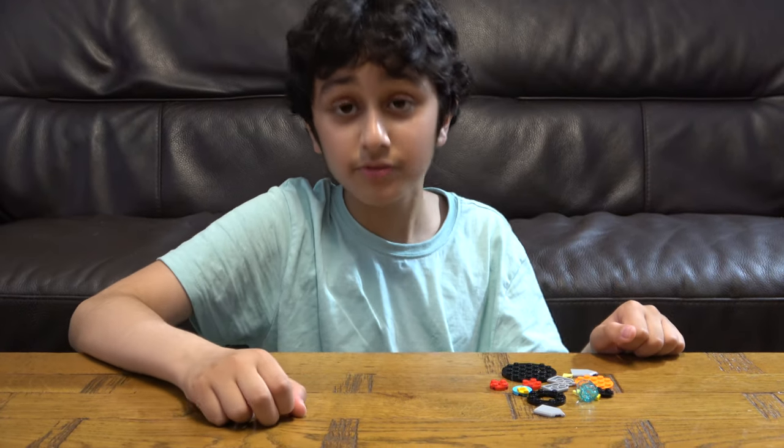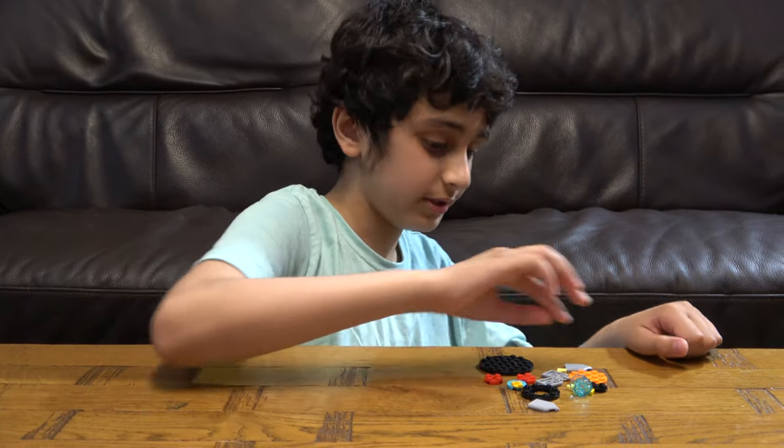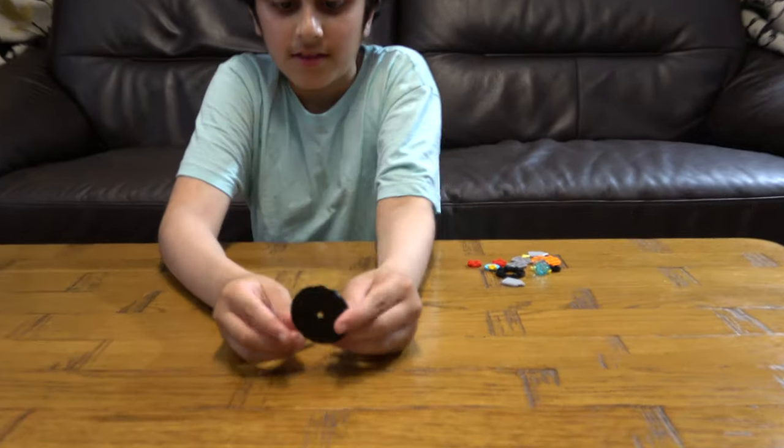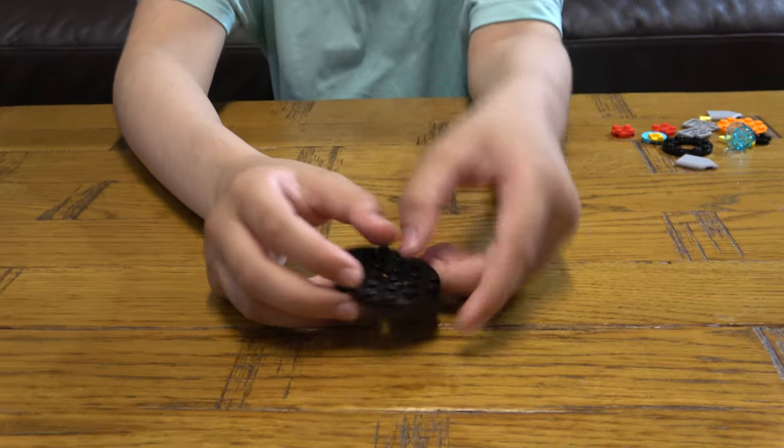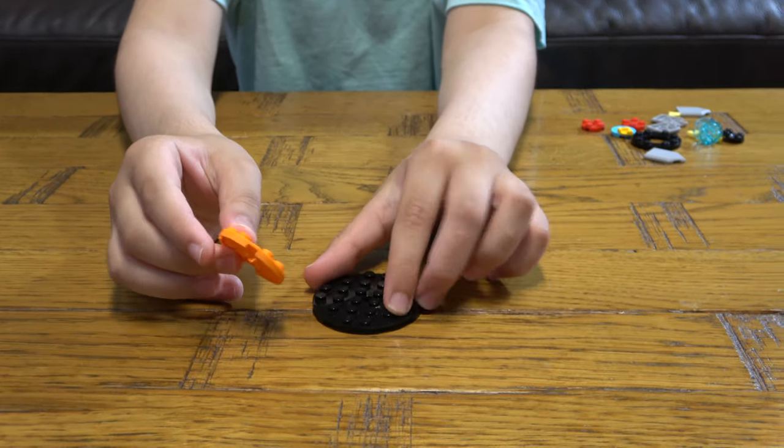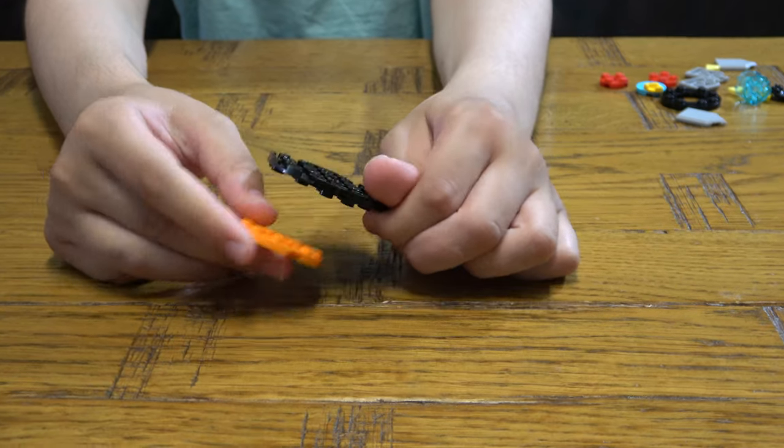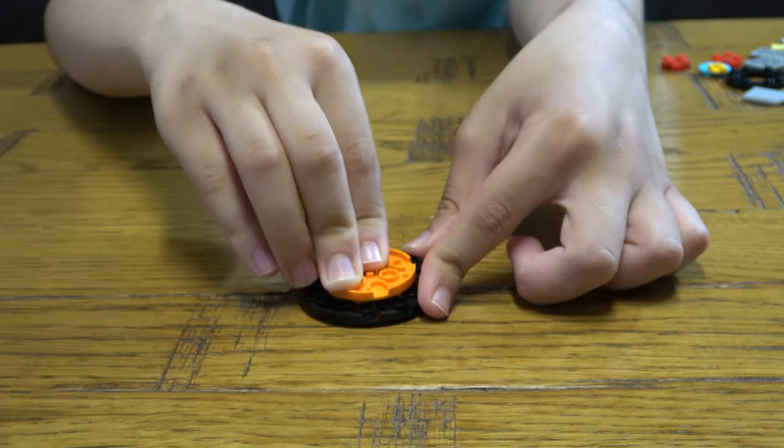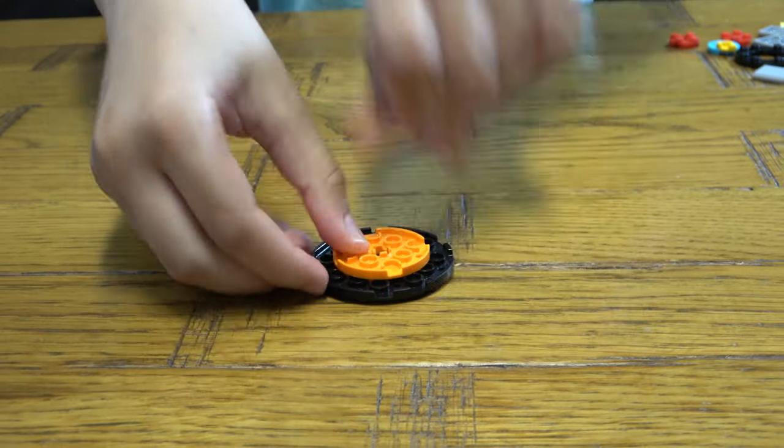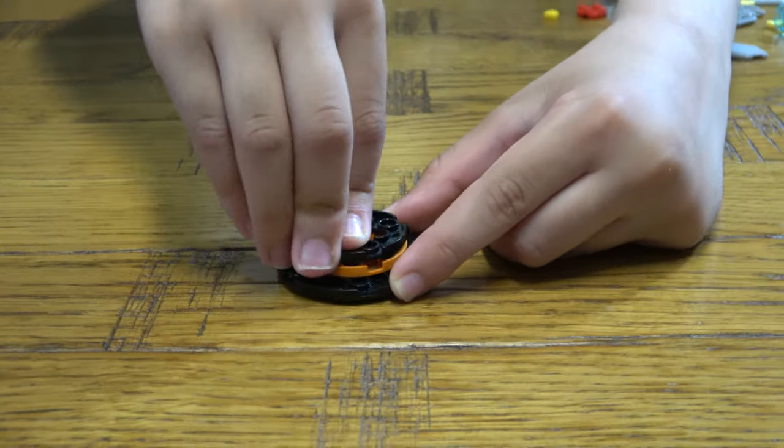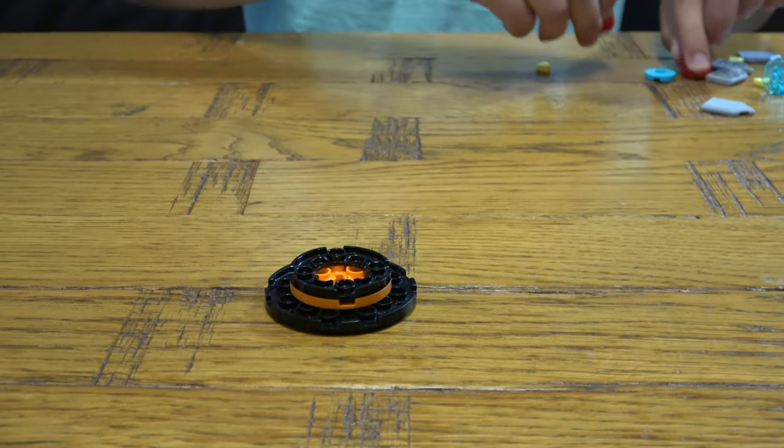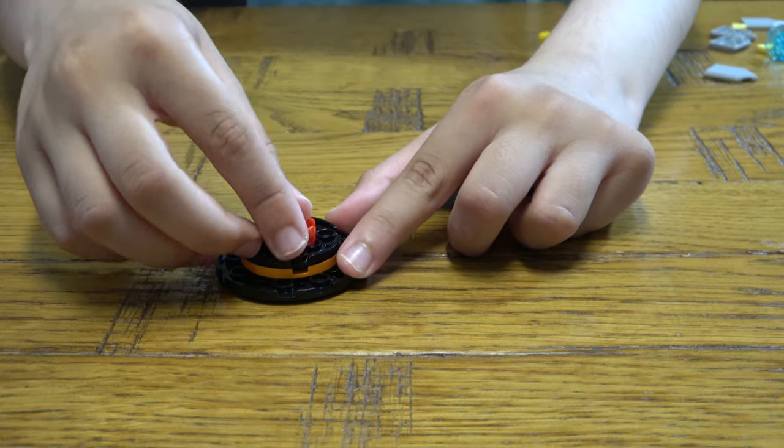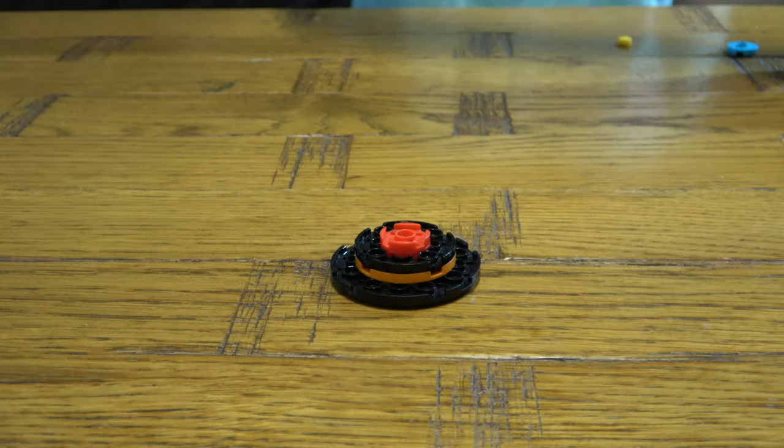So let's start building. First we're going to get this thing, we're going to put this underneath here like that. Place this over here like that, this here, then place this over here. Then you're going to place this underneath.